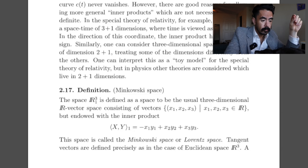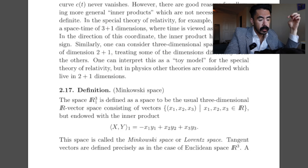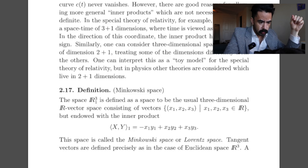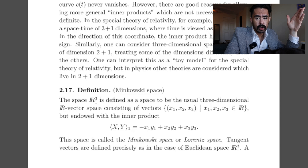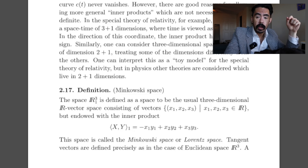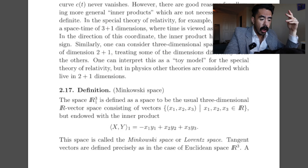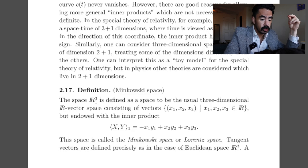The first definition is of Minkowski space. The space R-sub-1 superscript 3 is defined as the usual three-dimensional real vector space consisting of vectors (X1, X2, X3) with real entries, but endowed with the inner product: for two vectors X and Y, the inner product is given by negative X1·Y1 plus X2·Y2 plus X3·Y3. This space is called Minkowski space, or Lorentz space. Tangent vectors are defined precisely as in the case of Euclidean space R3.